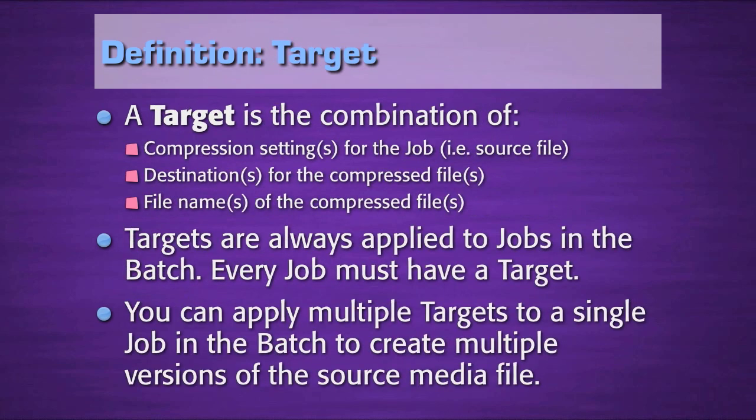A target is the combination of compression settings for the job — that is to say, the source file, the destinations for that compressed file, and the file names of that compressed file. Targets are always applied to jobs in a batch, and before you can compress, every job must have a target. Compressor needs to know how you want it compressed, where you want it stored, and what you want it called. If any of those is empty, it won't allow you to submit the batch for compression.